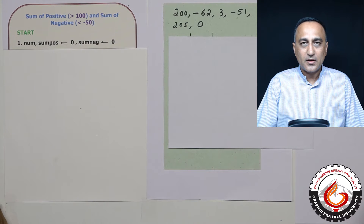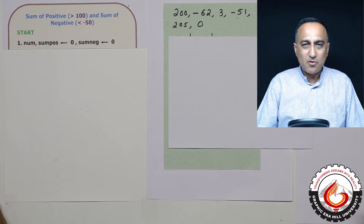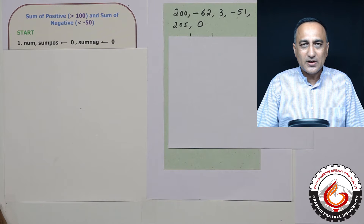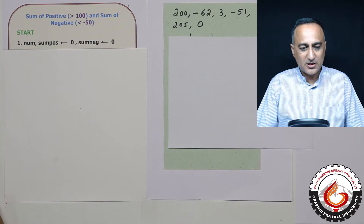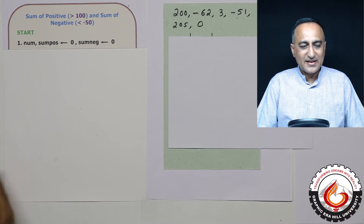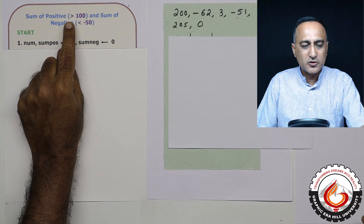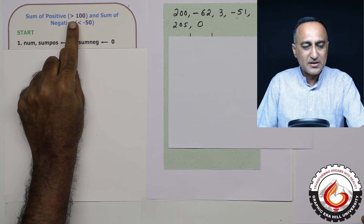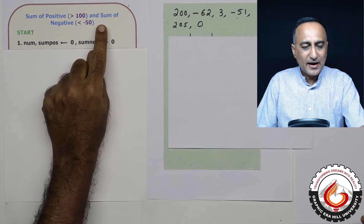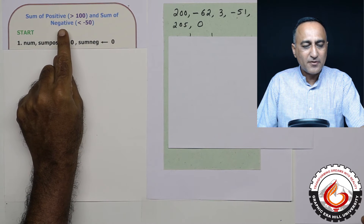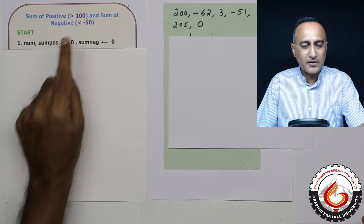In this video, we are going to discuss the sum of positive numbers and the sum of negative numbers the user enters, with a couple of conditions. The first condition is you need to add the sum of positive numbers only when the input number is greater than 100, and also find the sum of negative numbers which are lesser than minus 50.